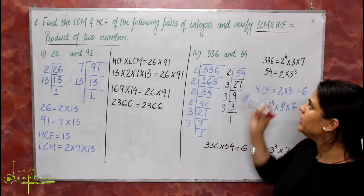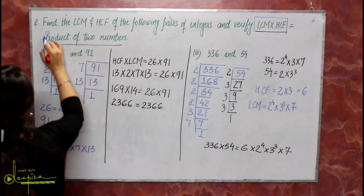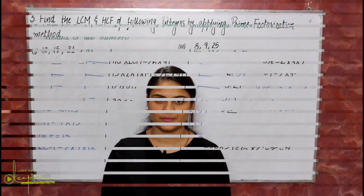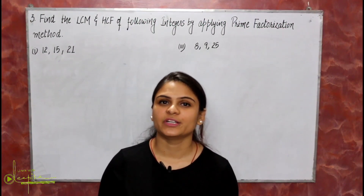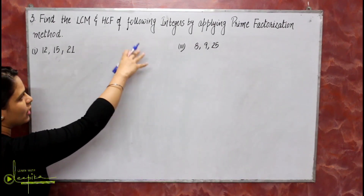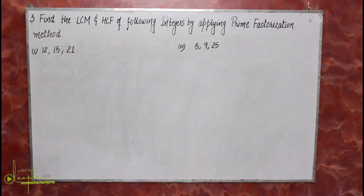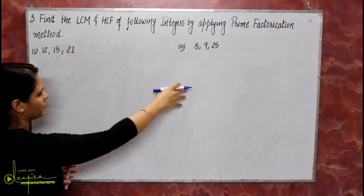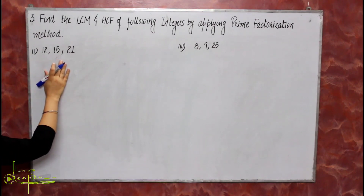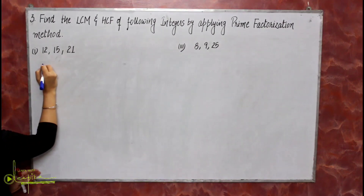Also, later on you will use this as a formula in another question. Question number 3: find the LCM and HCF of the following integers by applying the prime factorization method. I am taking two examples from the textbook. First is 12, 15, and 21.